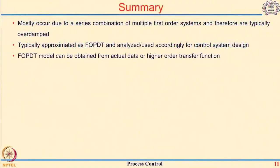To summarize, a higher order process is typically a series combination of multiple first order systems and therefore typically overdamped. Rather than analyzing each order separately, we approximate them as a first order plus dead time model, which is used to make predictions or design a controller for that higher order system. The FOPDT model can be obtained either as an approximation of the original transfer function or from experimental real plant data. We will stop this lecture here and in the next part we will look at the numerator dynamics. Thank you.